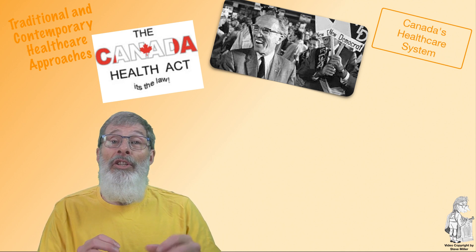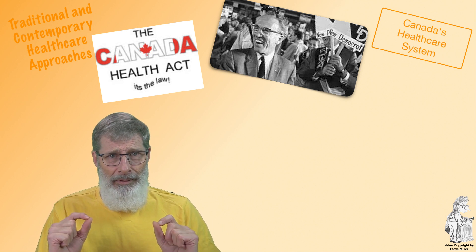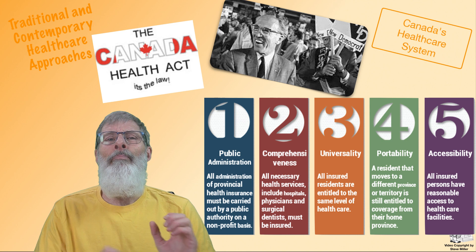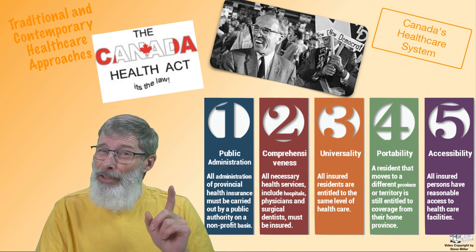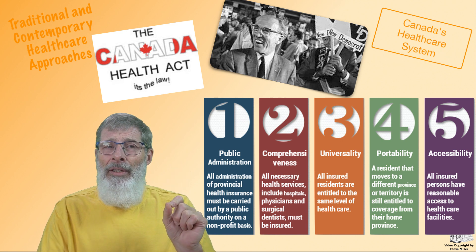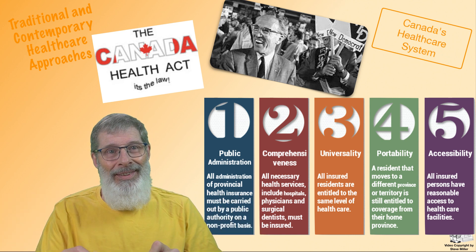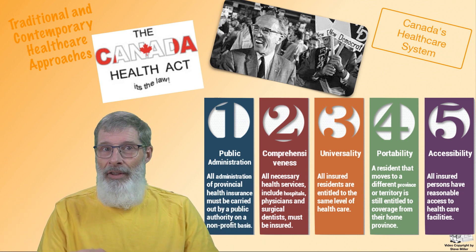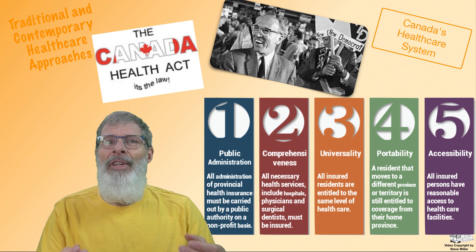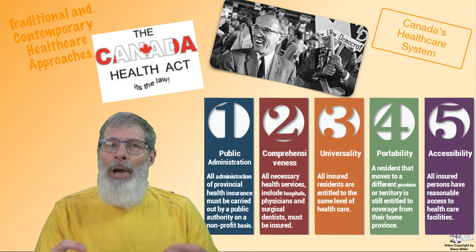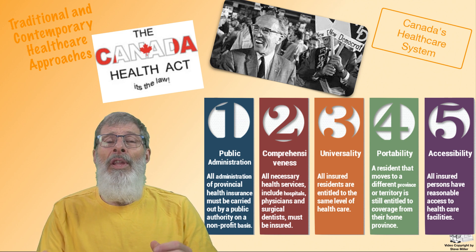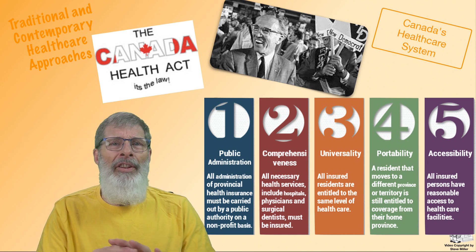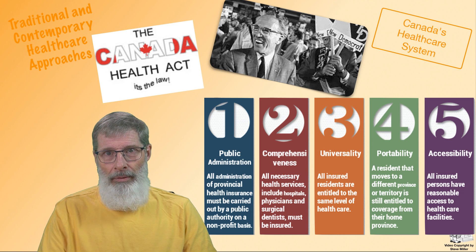We're going to review the five principles — you'll find them in your textbook as well. The first principle is public administration. 'Public' here means government — we are the people who put representatives into government, therefore the government is considered the public. Public administration means the provincial and territorial health care insurance plans — in Ontario that's OHIP, the Ontario Health Insurance Plan — and they're under the auspices of public administration, whereas private services are private fee-for-service businesses.